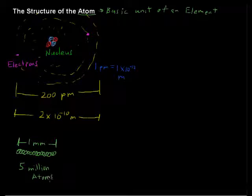Five million atoms just to span one millimeter. So that's the tiny size of an atom. But coming back to this, I was talking about this giant space relative to the nucleus. There's a huge amount of space between the nucleus and where the electrons reside.